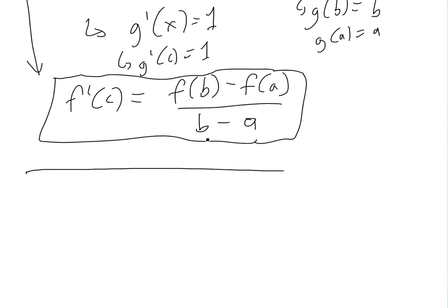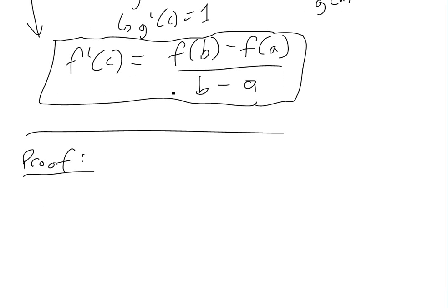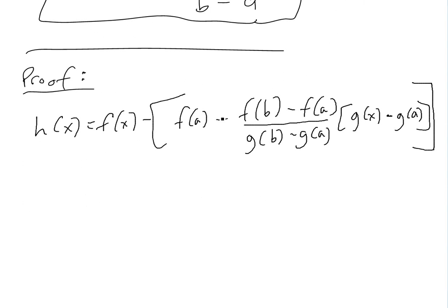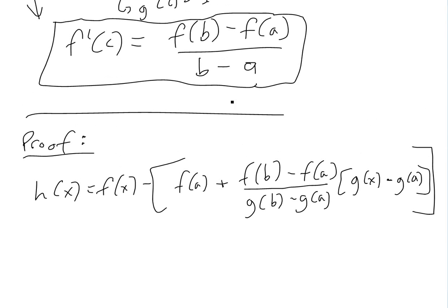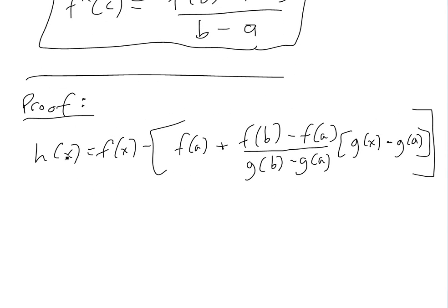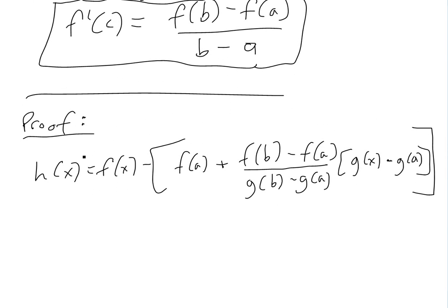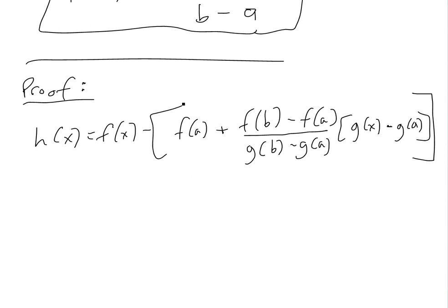To prove Cauchy's theorem, we use a method very similar to the proof of the ordinary mean value theorem — you can see that video for reference. We define h(x) equal to f(x) minus f(a), plus the quantity f(b) minus f(a) over g(b) minus g(a), times g(x) minus g(a). This is similar to the equation of a line, but now we have a more general version.